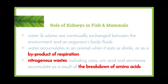So what is the role of kidneys in fish and mammals? Up until now we've been talking mostly about kidneys in humans, but now we need to look at the role in fish and other mammals. Water and solutes are continually exchanged between the environment and the organism's body fluids. Water accumulates when an animal eats, drinks, or as a byproduct of respiration. Nitrogenous wastes including urea, uric acid and ammonia accumulate as a result of the breakdown of amino acids, forming three different forms of nitrogenous waste depending on the organism.